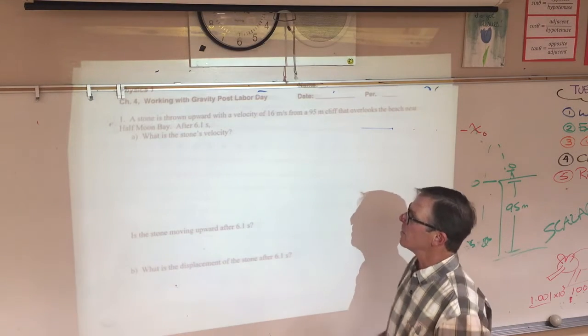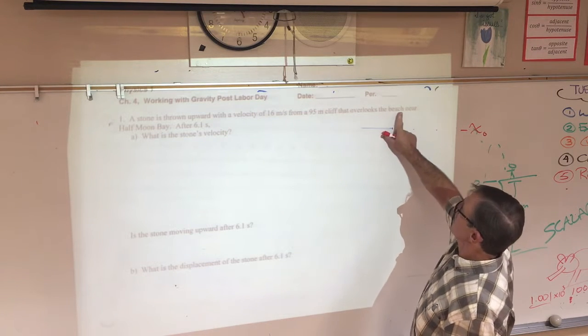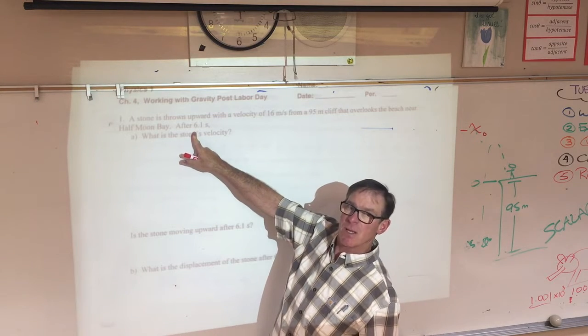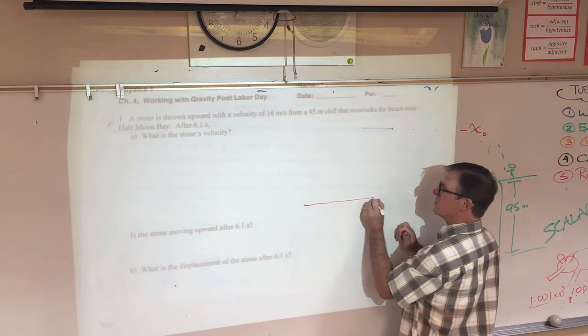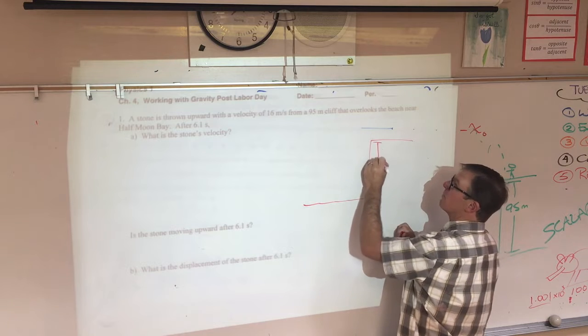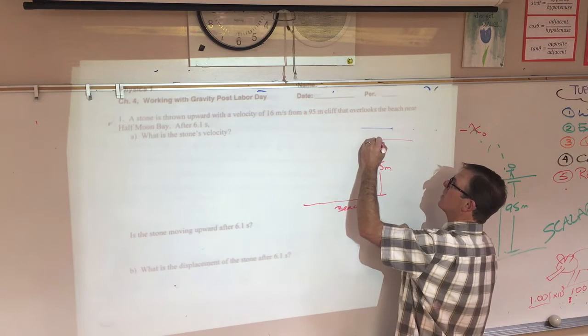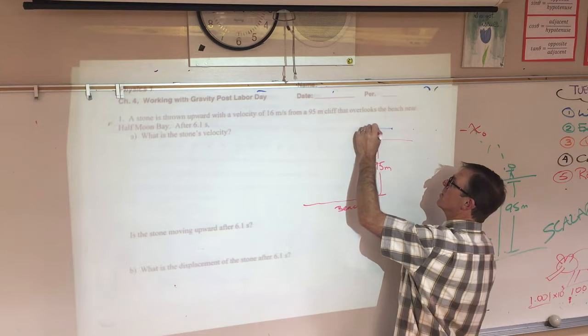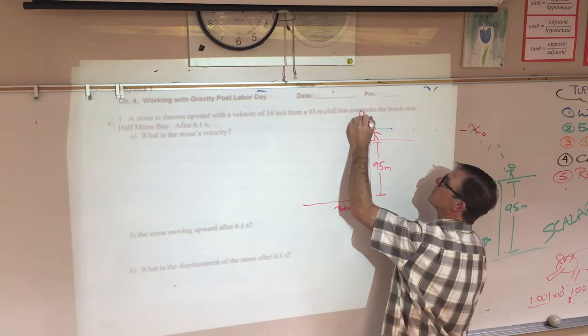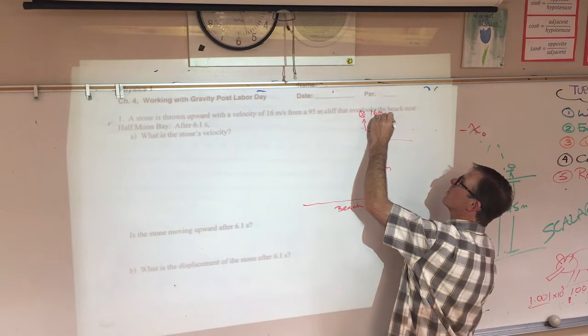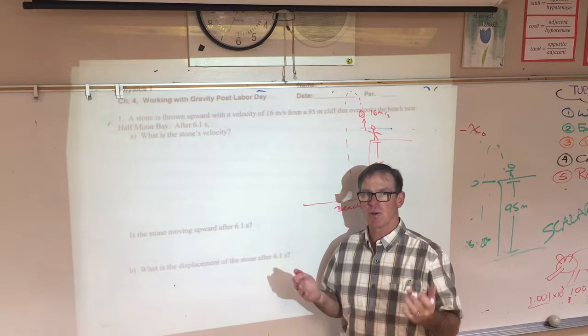On the board behind me is the problem. A stone is thrown upward with a velocity of 16 meters per second from a 95 meter cliff that overlooks the beach near Half Moon Bay. After 6.1 seconds, what is the stone's velocity? I'm actually going to diagram the situation first. The cliff is 95 meters high. Here's the beach and a person on top of that cliff throws a ball upward at 16 meters per second. Presumably that ball goes up and comes down. We want to know what it's doing 6.1 seconds later.